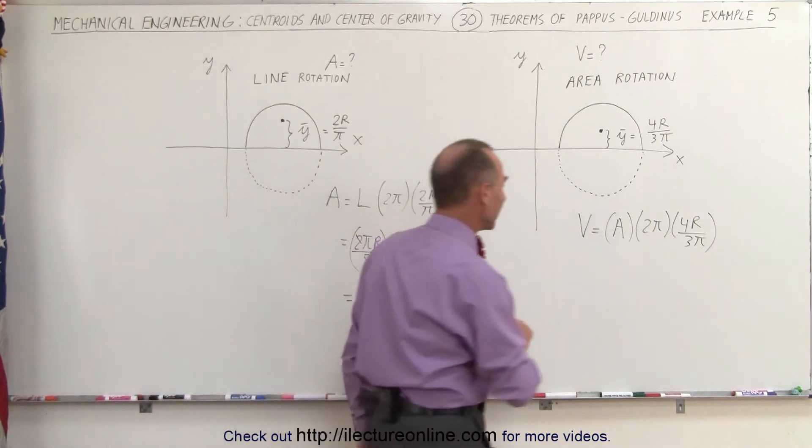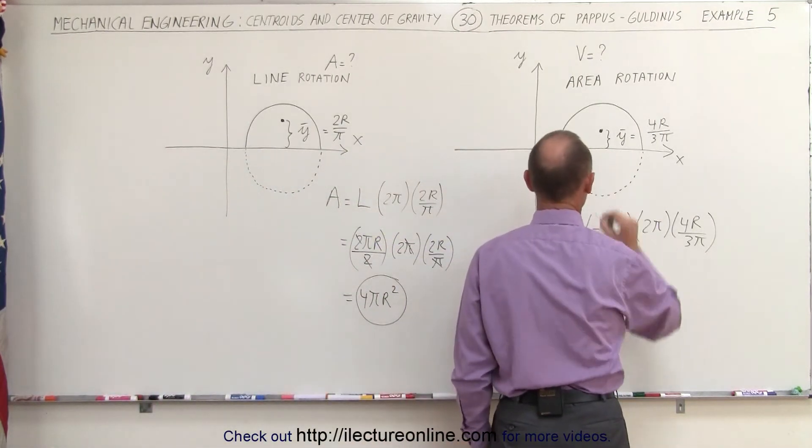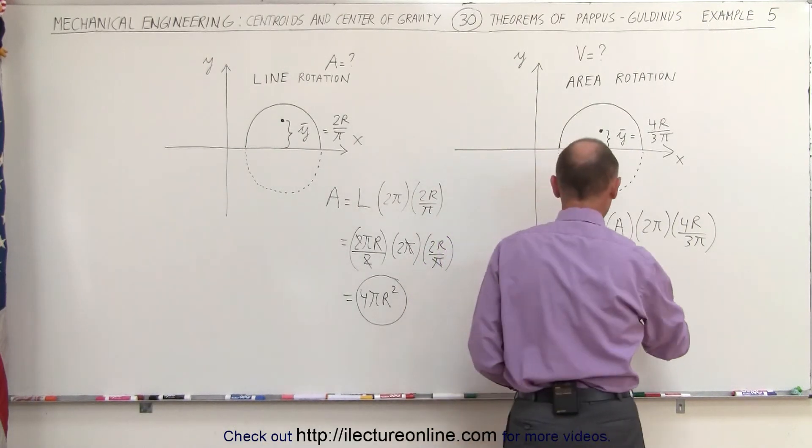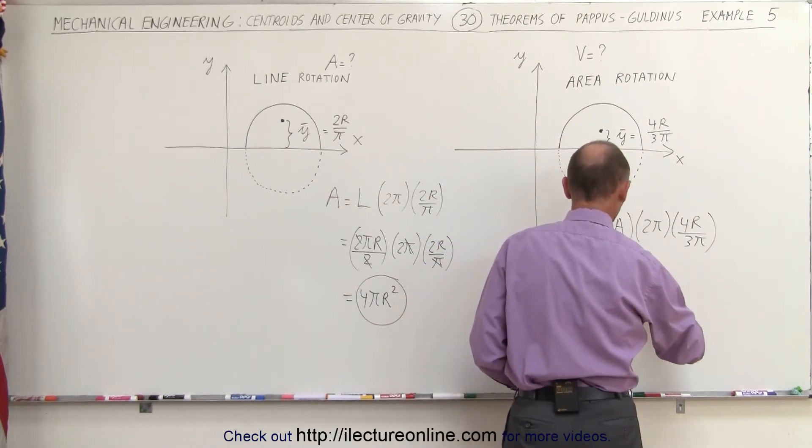Now, going for the volume, let's see what we end up with. The area of a semi-circle is, well, for a full circle, it's πr². For a semi-circle, it would be 1/2 πr².